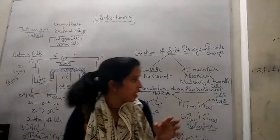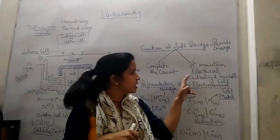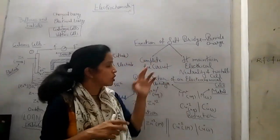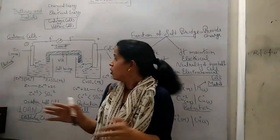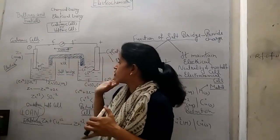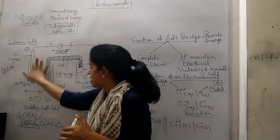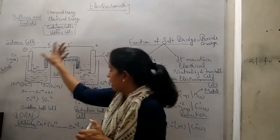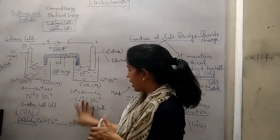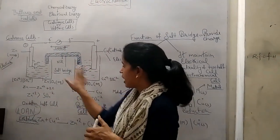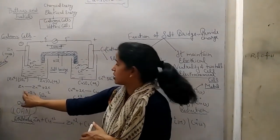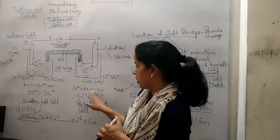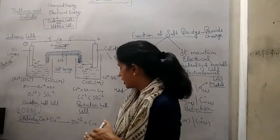In this way the salt bridge maintains the electrical neutrality of both half cells and also completes the circuit. This is the use of the salt bridge. The left-hand side is where oxidation occurs, and the right-hand side is where reduction occurs. I have written the oxidation and reduction reactions here.